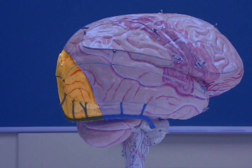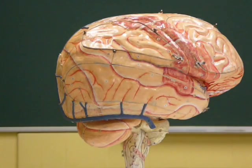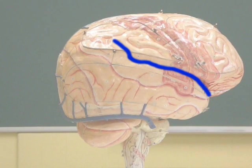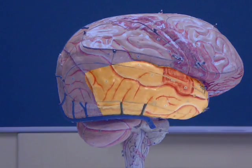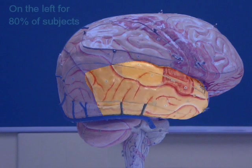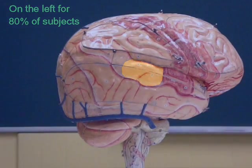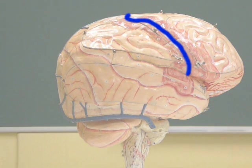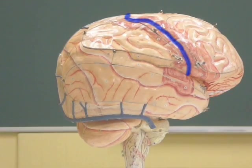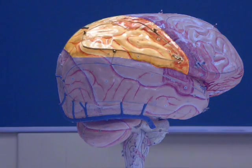The occipital lobe, involved in vision. The sylvian fissure. The temporal cortex, involved in audition. Wernicke's area. Rolando's scissure. The parietal cortex, with somatosensory pathways.